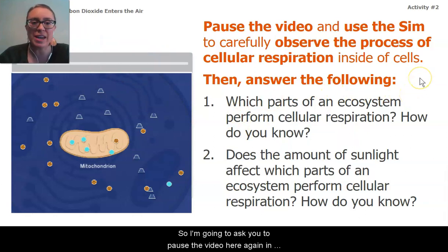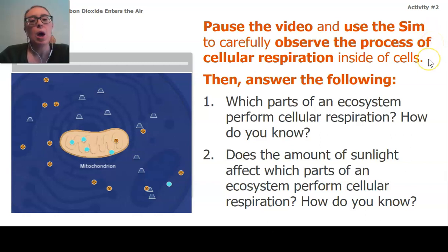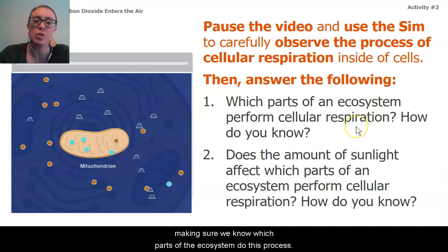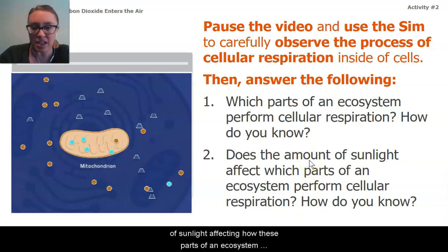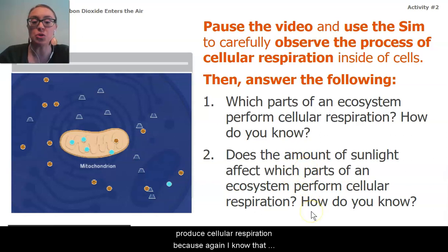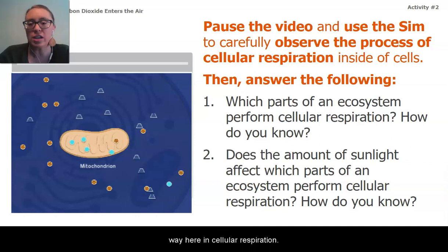Use the sim to once again observe cellular respiration, but this time really pay particular attention to making sure we know which parts of the ecosystem do this process and what are the limiting factors. Is sunlight, and is the amount of sunlight, affecting how these parts of an ecosystem produce cellular respiration? Because again, I know that the amount of sunlight mattered when it came to photosynthesis, so I'm curious if it matters the same way here in cellular respiration.